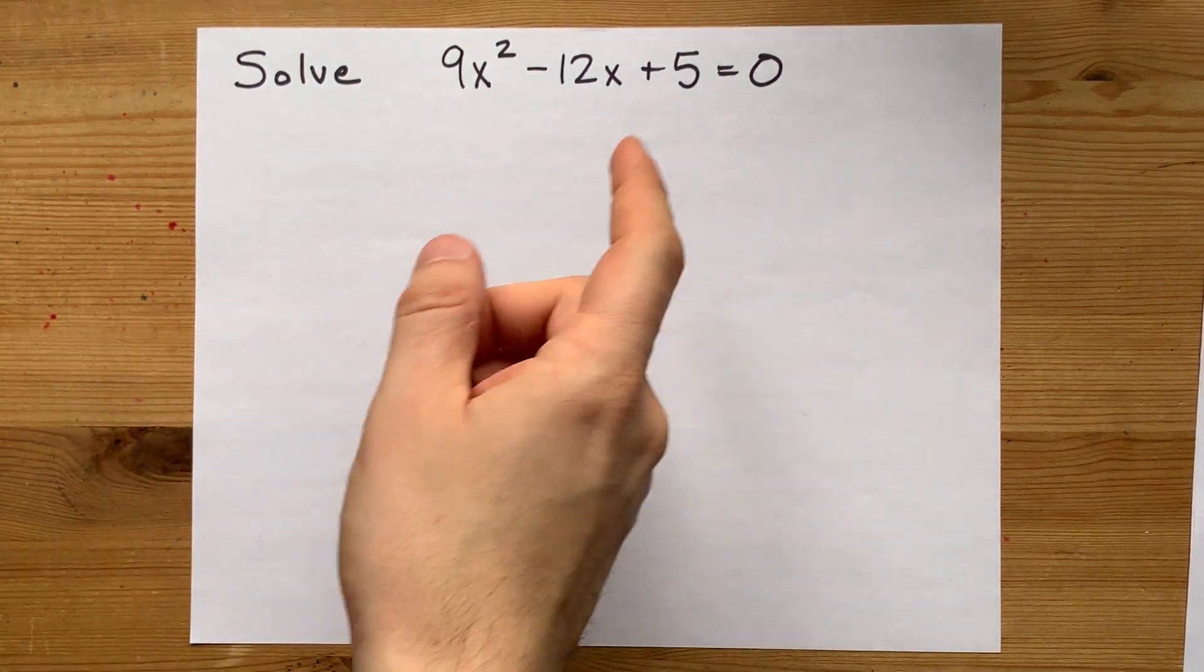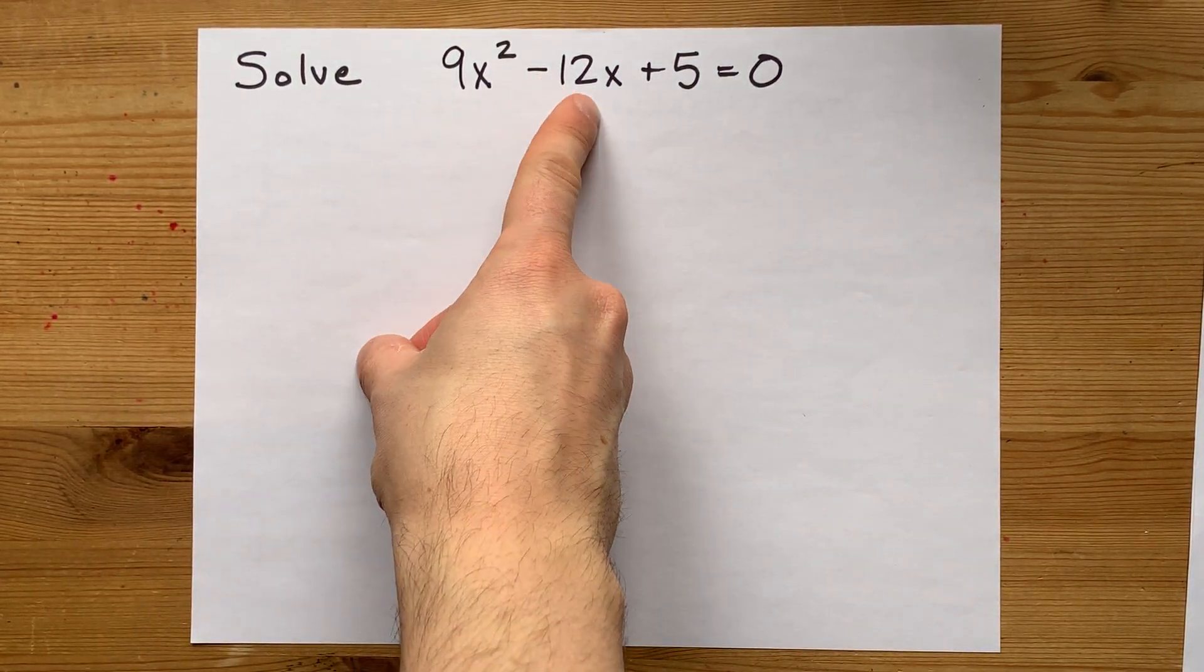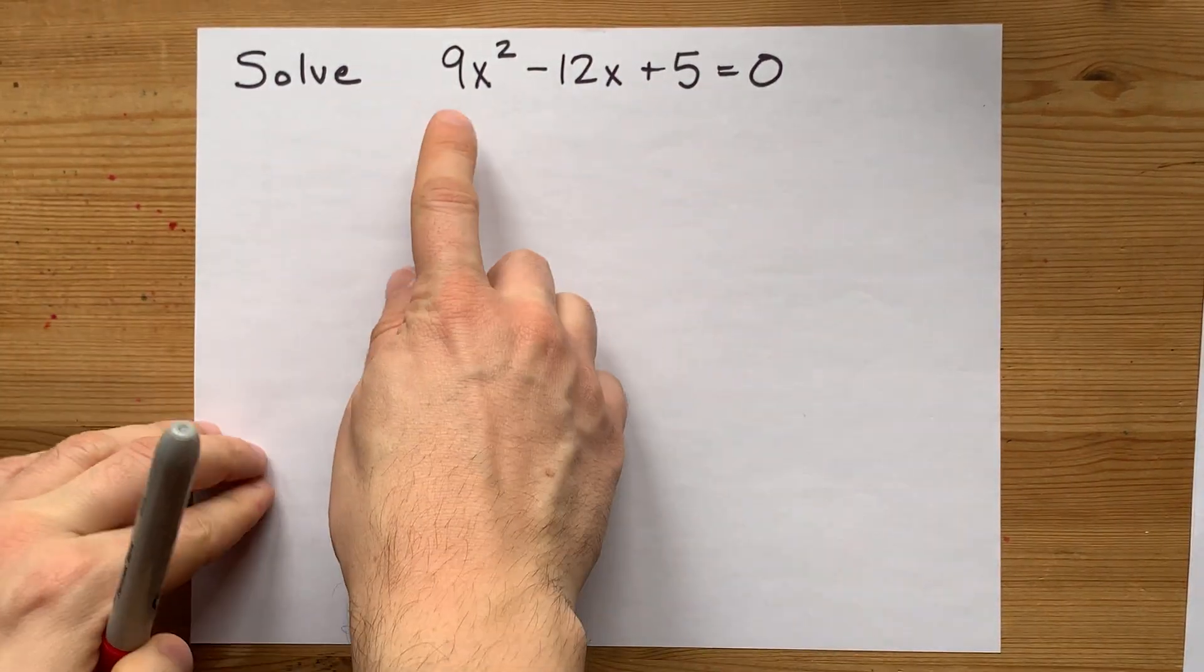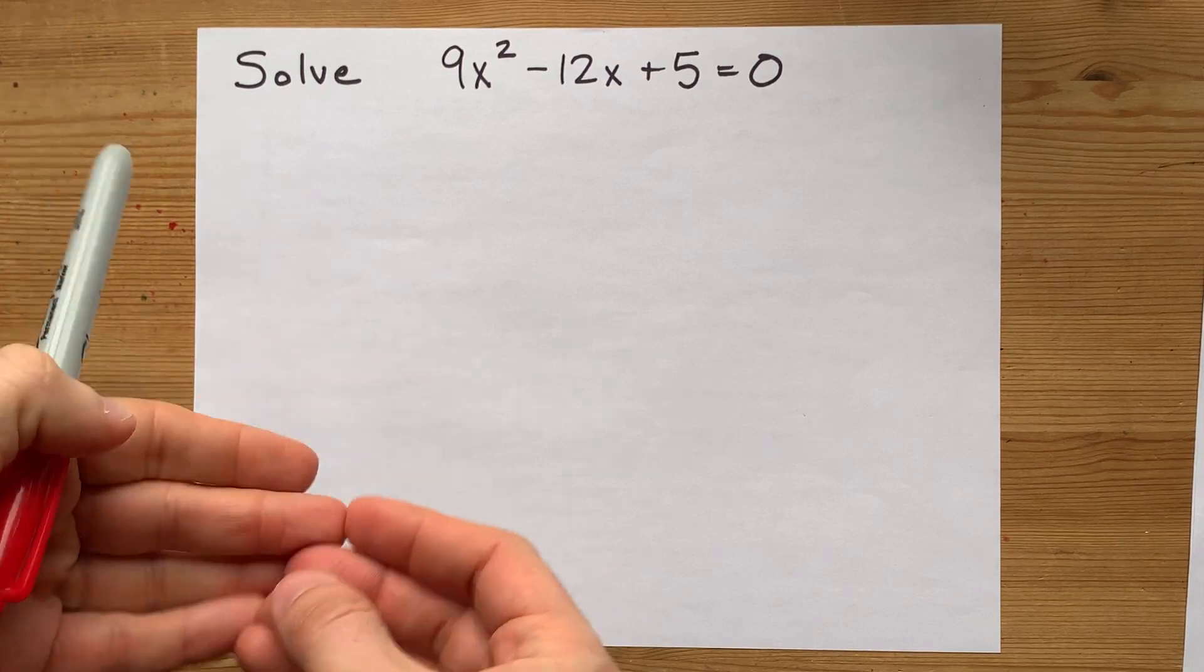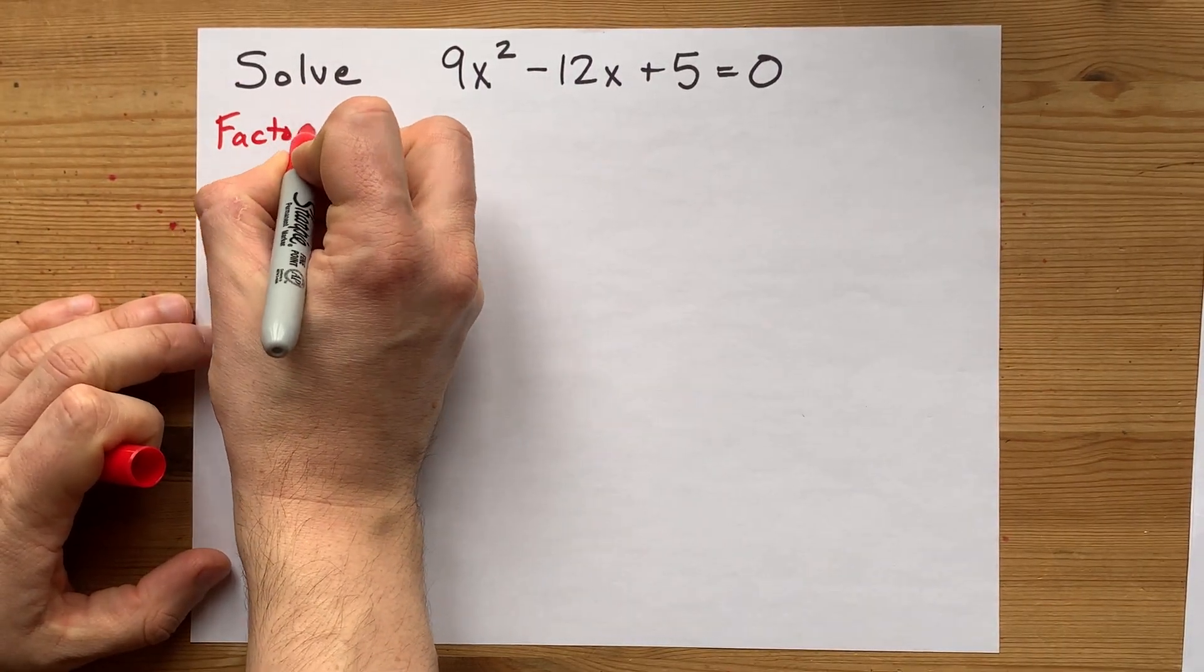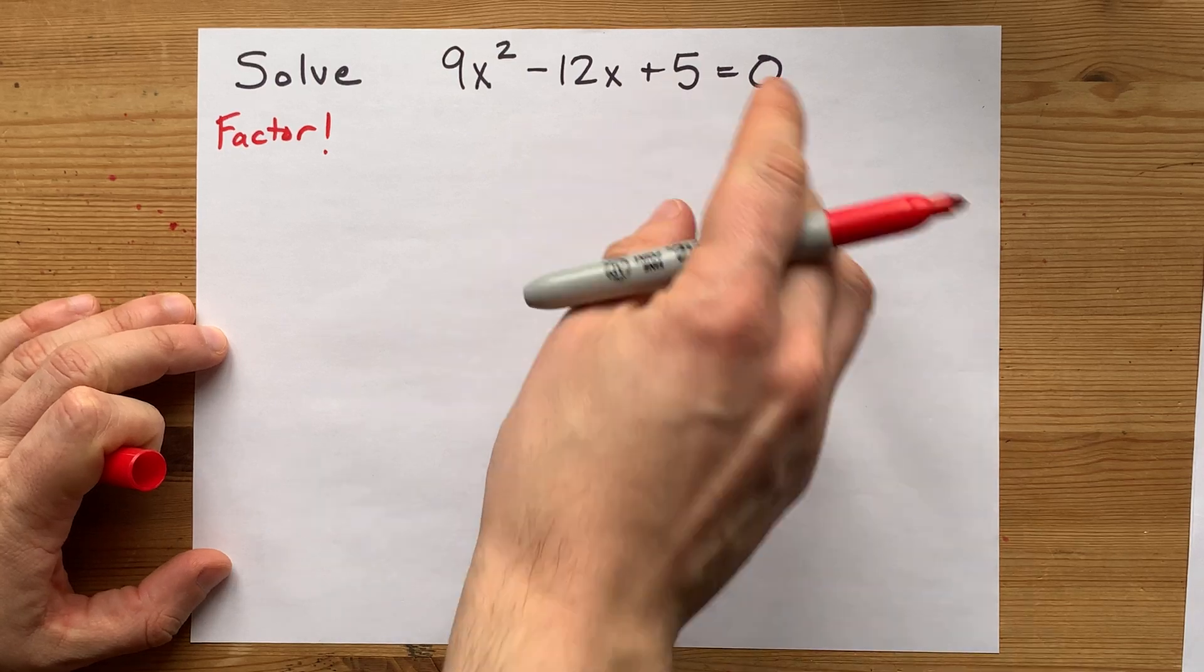How do you solve the quadratic equation 9x² - 12x + 5 = 0? Well, the way that always works, no matter what these numbers are, is called the quadratic formula. But if you can factor this quadratic equation, then you're supposed to.